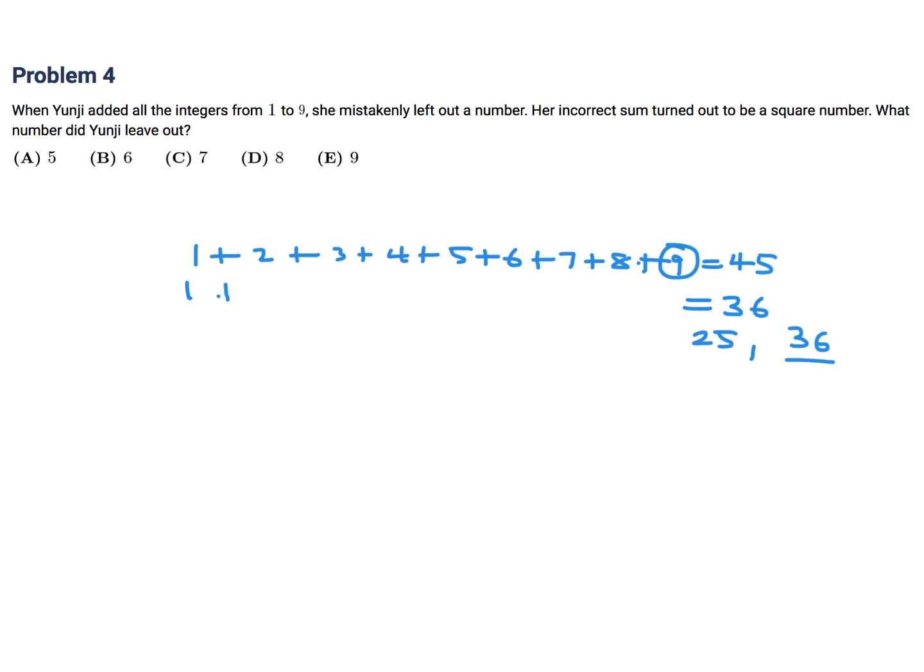So it'll just be 1 plus 2 all the way till 8. And that would basically be how you do it. And therefore, the number that was taken out, mistakenly left out, was the 9. And therefore, that means choice E.